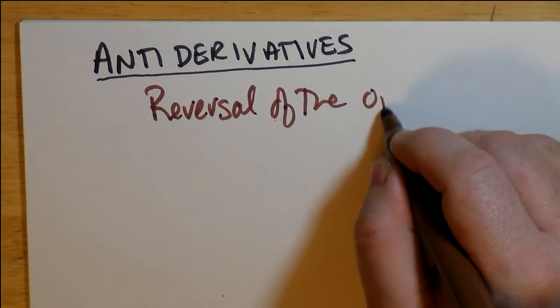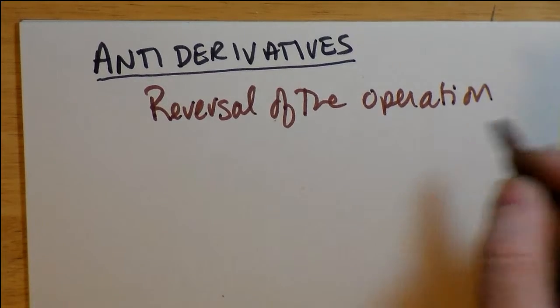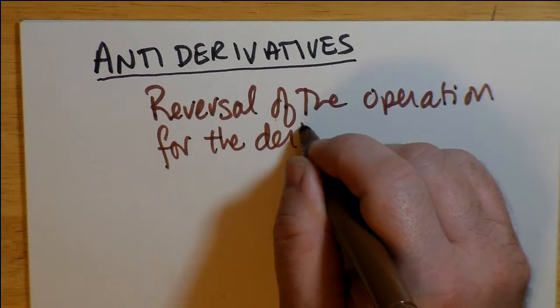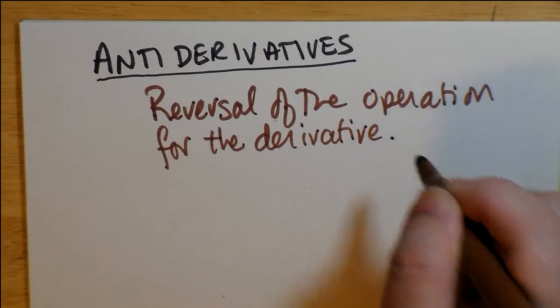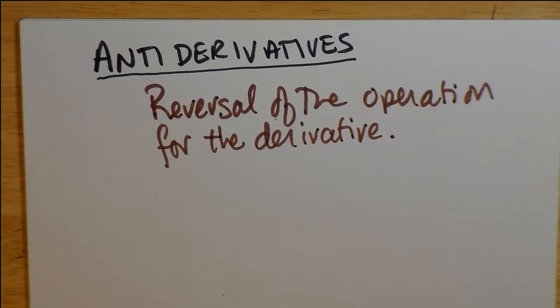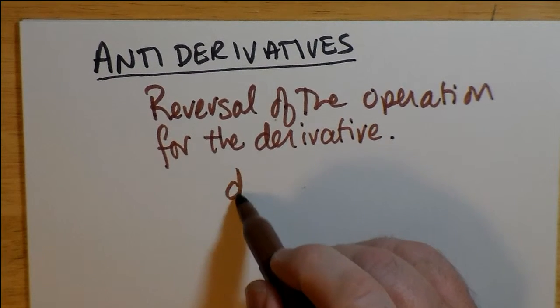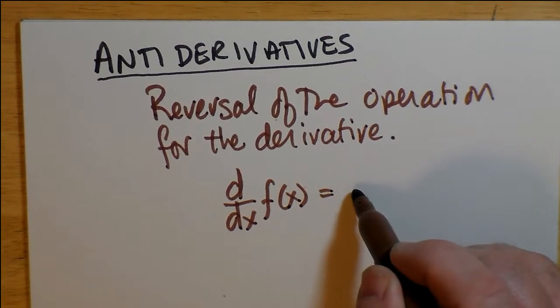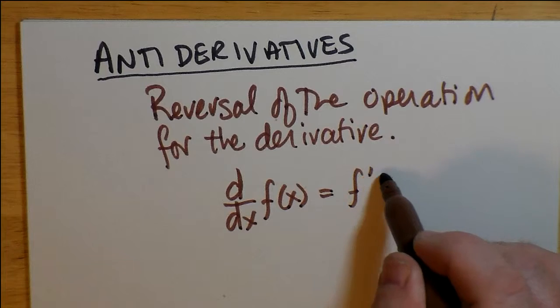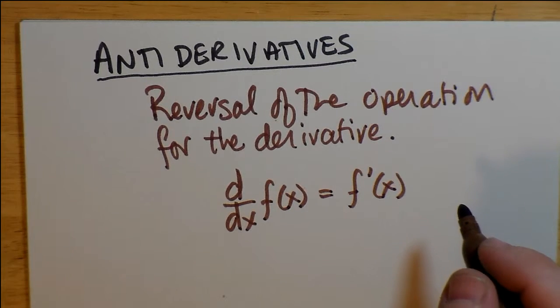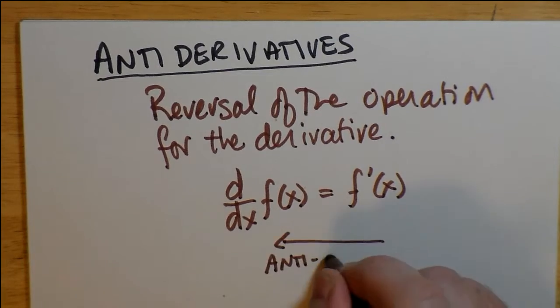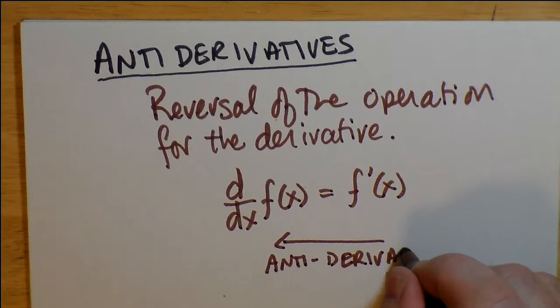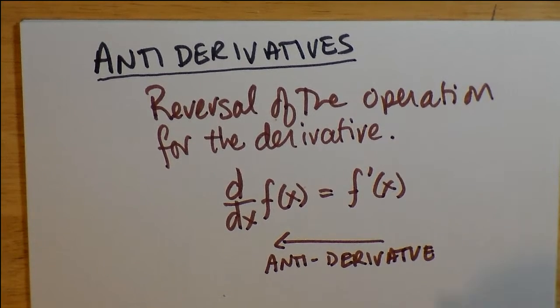And essentially it just reverses the operation of derivatives. So when you differentiate, the reversal of differentiation is anti-differentiation, also known as finding the anti-derivative. So we may define d/dx of f(x) as being f prime, and by simply going backwards we can get f(x) back again, which makes it kind of like an inverse operation of some kind.